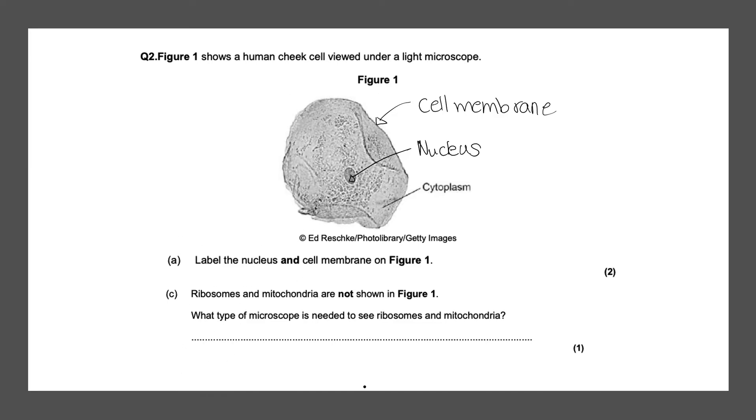Ribosomes and mitochondria are not shown in figure 1. What type of microscope is needed to see ribosomes and mitochondria? As we discussed in our previous video, mitochondria and ribosomes are too small to see with a light microscope. We would need to use an electron microscope to view them. So our answer would be the electron microscope. And correctly labeling these two organelles would give you your first two marks. And for electron microscope that will give you your one mark.